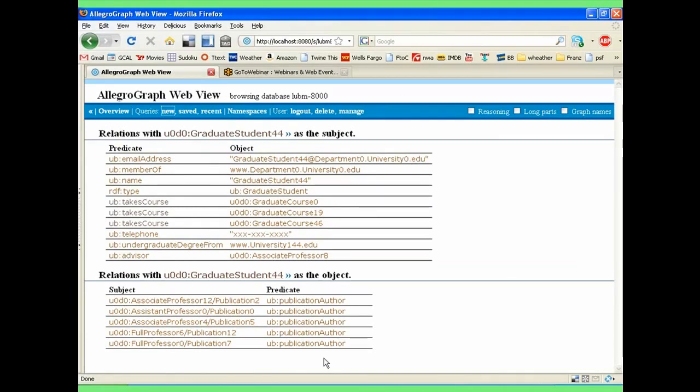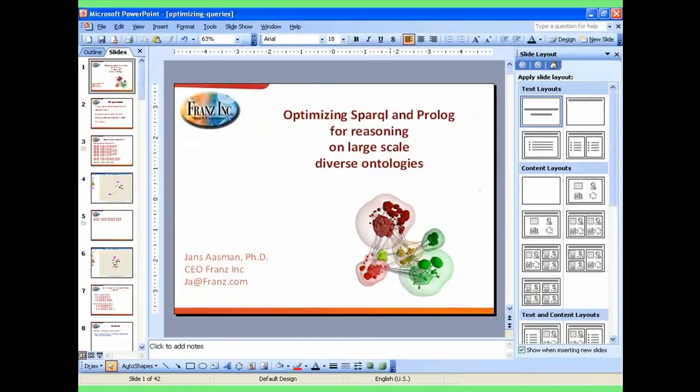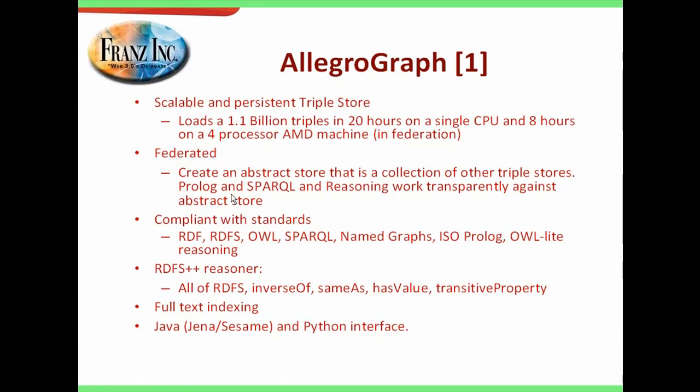Okay, so this is about the triple store. Let me go back to the presentation. Some features of AllegroGraph - we are a very scalable and of course persistent triple store. We load 1.1 billion triples in 20 hours on a single CPU machine and 8 hours on a four-processor AMD machine. If we do that then we actually load the data in four streams. Federation basically means in our system that you can have a collection of triple stores on the same machine or on different machines, then you create a federated database which basically is a set of pointers that point to other databases, and then our Prolog and SPARQL reasoner will work against that new abstract store and the query engine will figure out where your triples are.